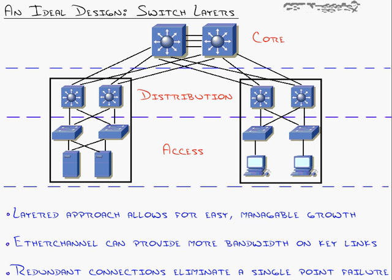When you design a switch network, it's best to approach it in layers. What you see here is a picture of an extremely large network designed in three separate layers that Cisco has dictated as the access layer, distribution layer, and the core layer. It's hard to talk about this picture without really getting into the growth of a network, so imagine yourself starting a company.